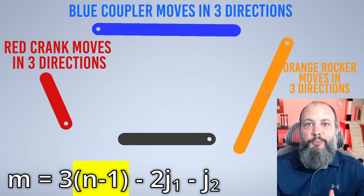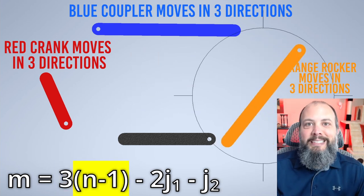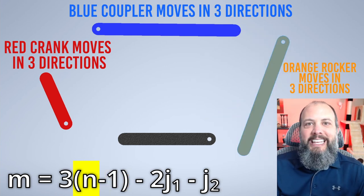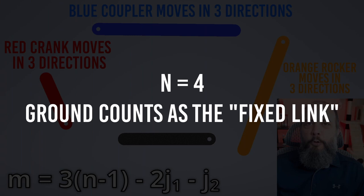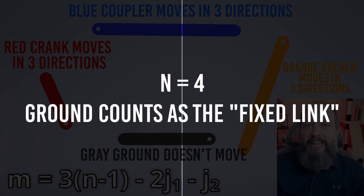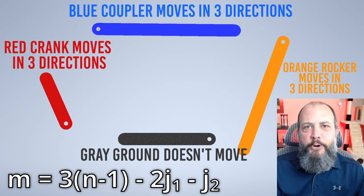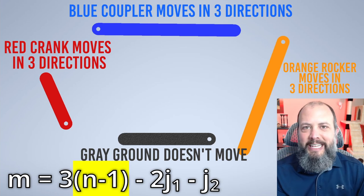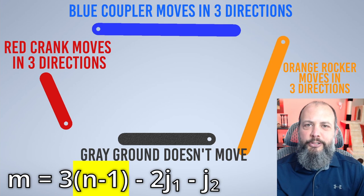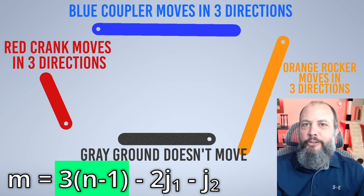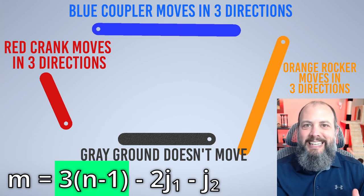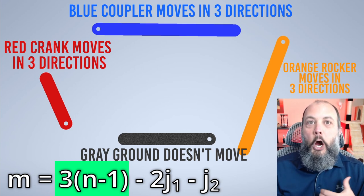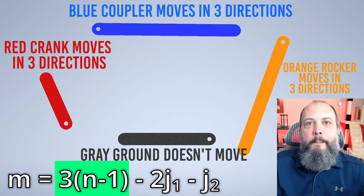The n minus one just represents how many moving pieces there are. In this equation n represents the number of links in your system. But remember, when we're describing mechanisms, we include ground as a link, but ground doesn't move. So this is why n minus one: you subtract the link that represents ground. You're subtracting the fixed link. So the whole first part of this equation, three times n minus one, is just three directions of motion for all of the things that can move.